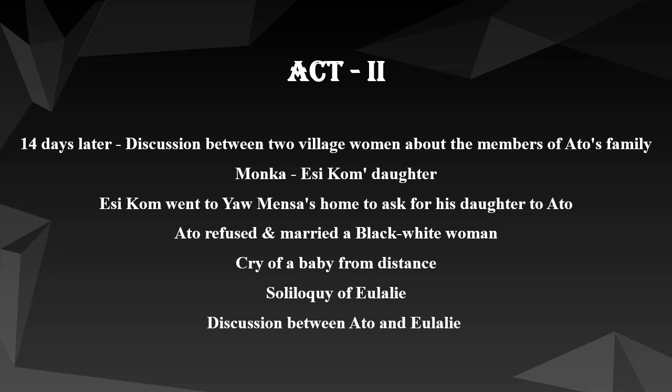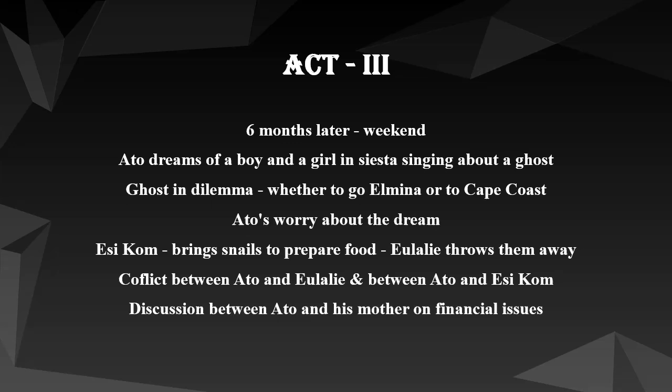Eulalie expresses the misconception she had about Africa — that she thought of it as a jungle and never thought there would be Coca-Cola in Africa. She expresses her identity and the pride her mother instilled in her, that God created her black and she cannot change it. She wishes her mother had been allowed to see her. Ato then joins her and the two discuss several things, teasing each other. Eulalie introduces the idea of starting a family, but Ato objects that they should stick to their original plan.